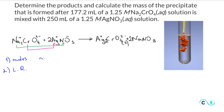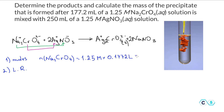The moles of sodium chromate equal the concentration, 1.25 molar, multiplied by the volume, 0.1772 liters — converting 177.2 milliliters to liters by dividing by 1000 — giving us 0.2215 moles of sodium chromate.